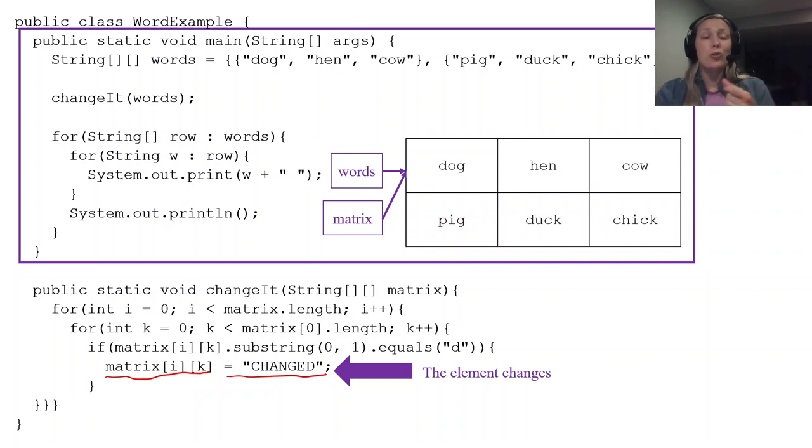So this method, I can tell you, goes through the array. If the word starts with D, it's going to become the word "changed." I know all of that just by looking at the code. So dog and duck are my two words that start with D. Those are going to become the word "changed."